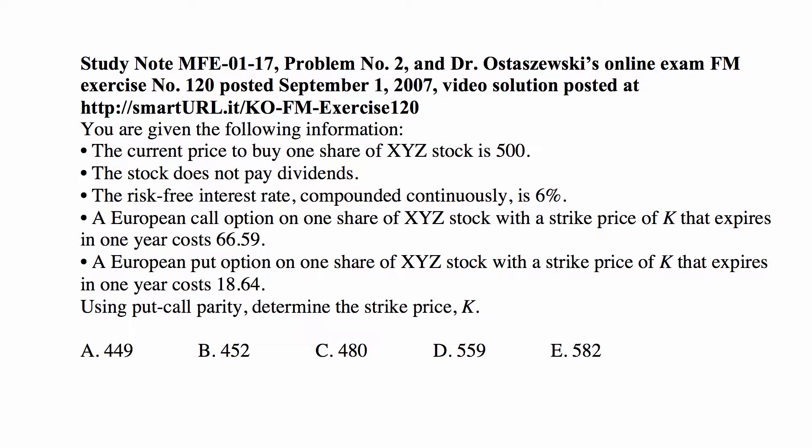The risk-free interest rate compounded continuously is 6%. A European call option on one share of XYZ stock with a strike price of K that expires in one year costs 66.59.